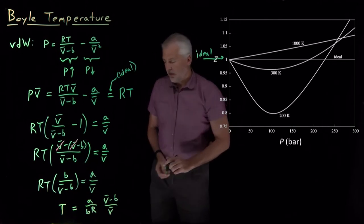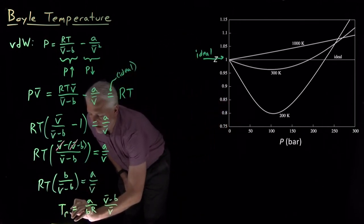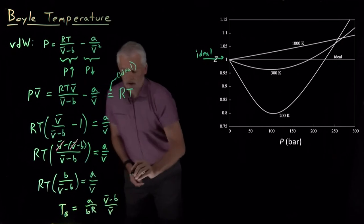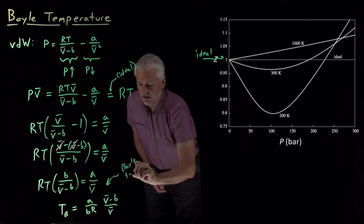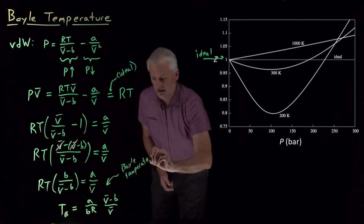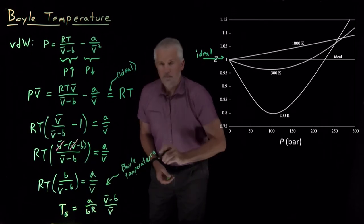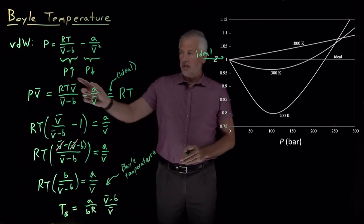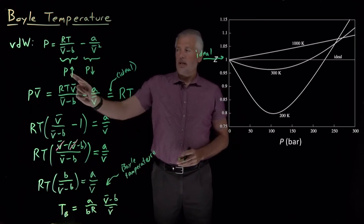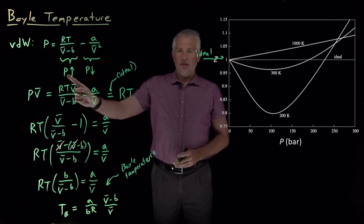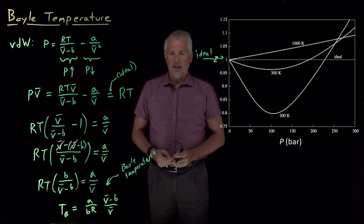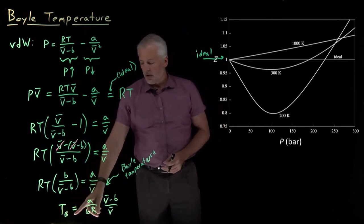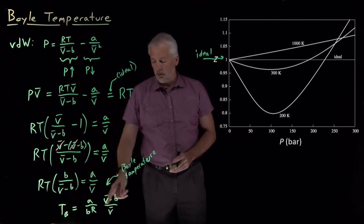I'll do two things here. First, let's go ahead and name this quantity. That quantity is called the Boyle temperature. Just the name we give to the particular temperature where a gas behaves ideally because of a cancellation between the positive deviations from the finite molecular size and the negative deviations from the attractive intermolecular interactions. So the Boyle temperature would be this collection of constants for a van der Waals gas.